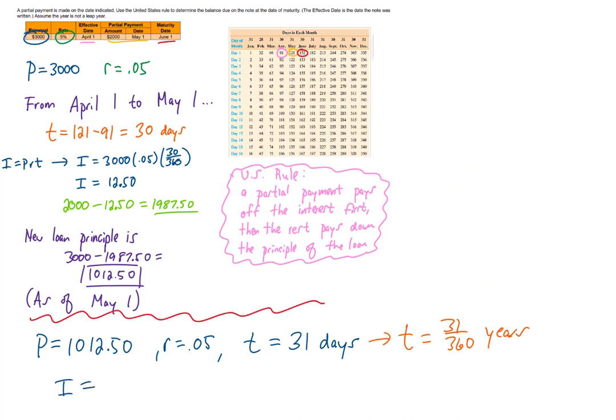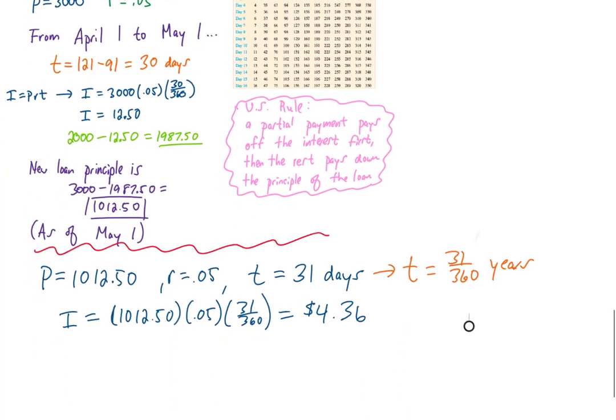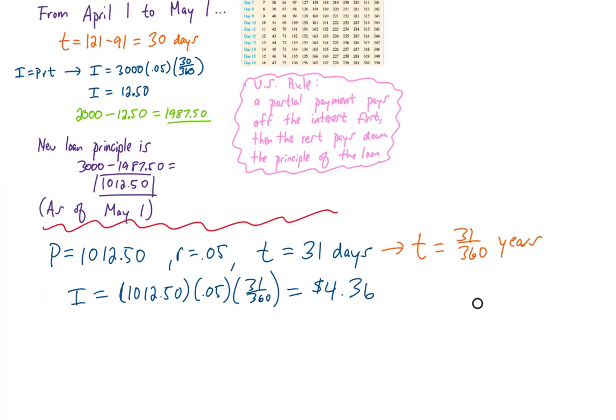Now we can plug all of that into our simple interest formula, I equals PRT. Plugging all of that into a calculator gives me that the interest that we owe on this thing is about $4.36. Now finally, the balance due on this thing, as of June 1st, the maturity date, is the principal of the loan as of May 1st plus the interest that we owe. That gives me a balance of $1,016.86.